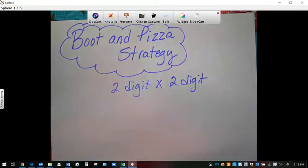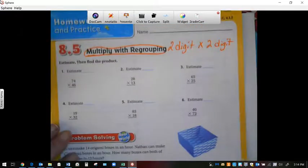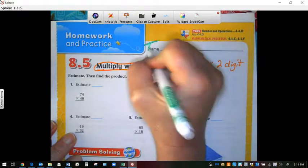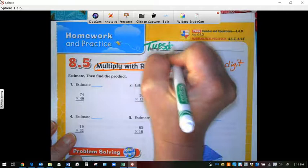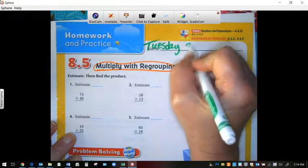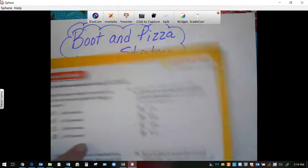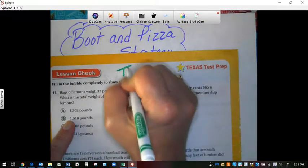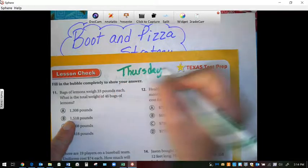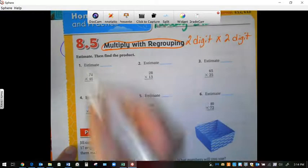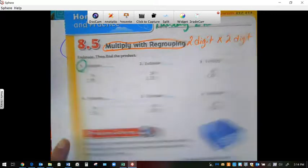So we are going to start with page 295. So for Tuesday, you are doing 295. And on Thursday, you are doing the back. It's only two pages for this week. Alright, so we are going to work on number one on page 295.